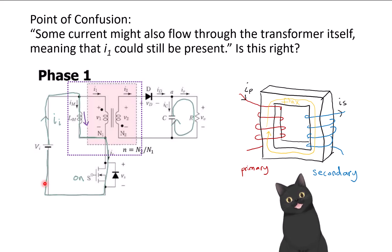So we have current going from the input voltage and is going through this coupled inductor. The question is, some current might flow through the transformer itself, meaning that I1, that's this current shown here, could still be present. Is that right?